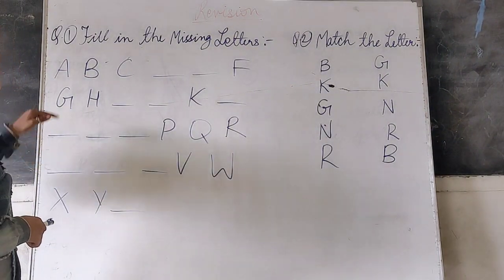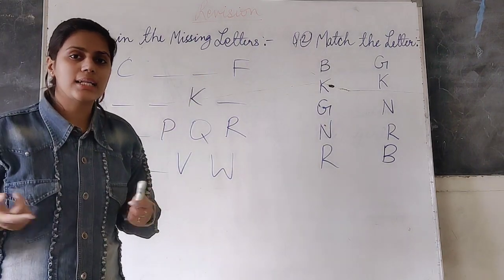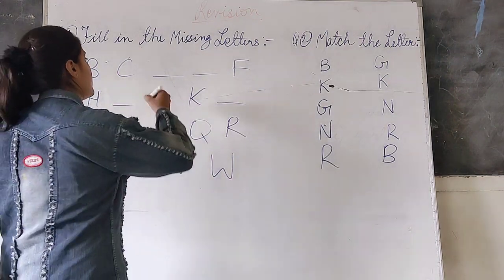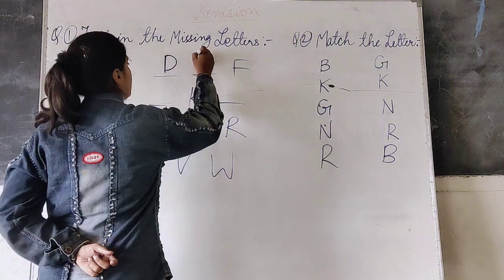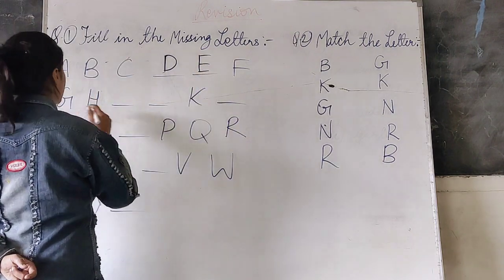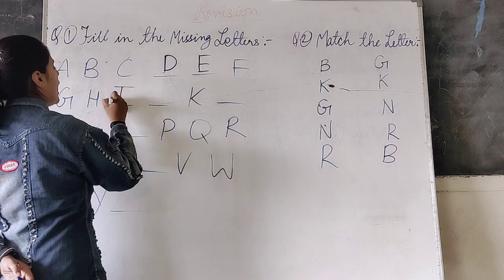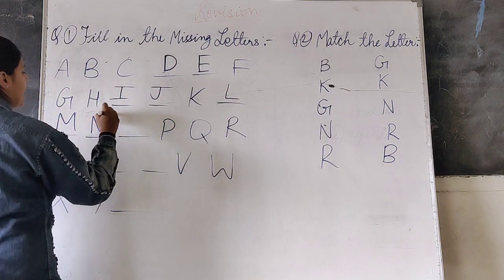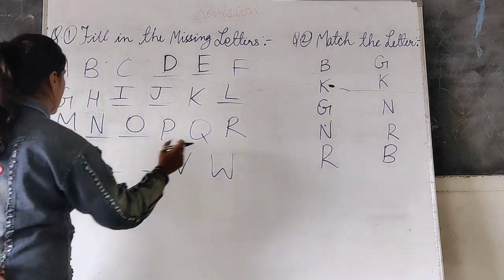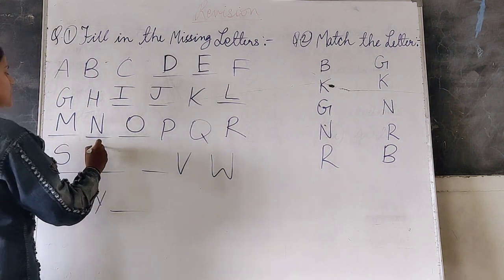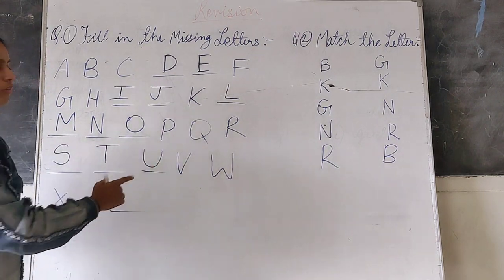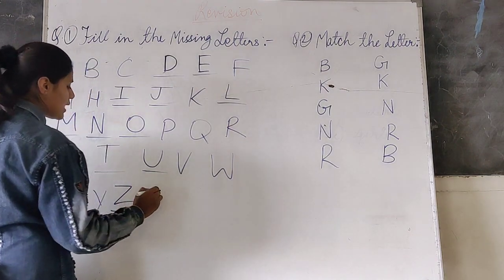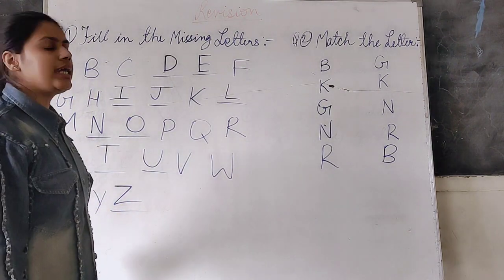Now, question number first is fill in the missing letters. What do we do? Missing letters. What do we do? A, B, C, D, E, F, G, H, I, J, K, L, M, N, O, P, Q, R. And then we are doing English. Okay?